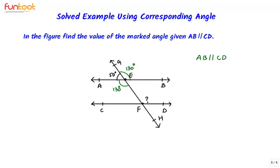Now we will use the corresponding angle axiom. We can see that this angle and the angle we have to find out form a pair of corresponding angles. So the measure of this angle and this angle will be equal. So if this is 130 degrees, then this is also 130 degrees.